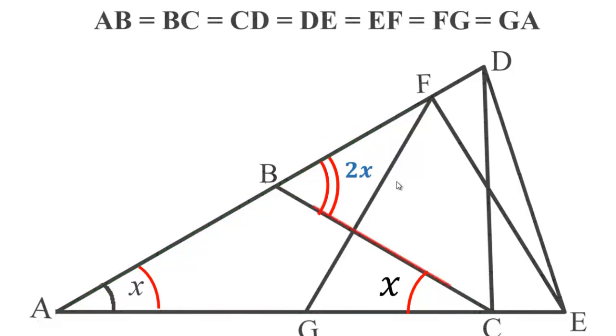So again, side BC equals to side CD. Therefore by property one, angle CDB equals to 2X.